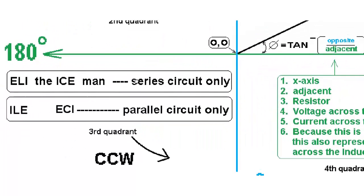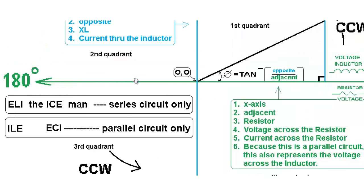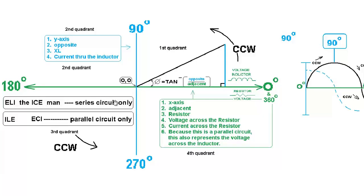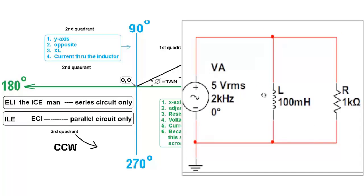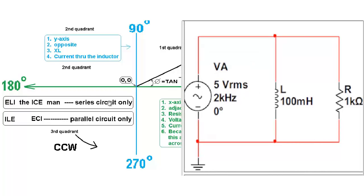So the current is the odd man out — it's the thing that's not in direct relation to the voltage. This horizontal axis represents, because this is a parallel circuit, also the voltage across the inductor. Now there's a very important mnemonic called ELI the ICE man. For a series circuit only, the voltage leads the current in an inductor — that's ELI. And ICE says the current leads the voltage in a capacitor. However, this only applies to a series circuit, and we do not have a series circuit.